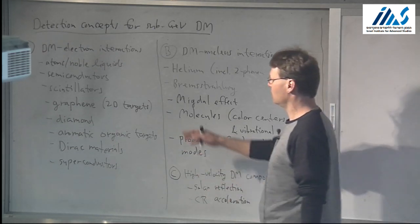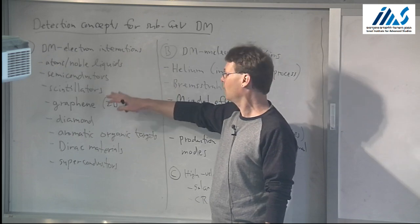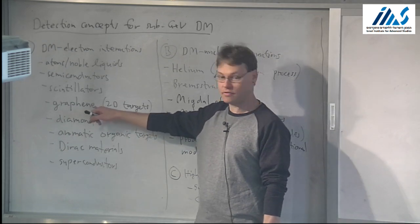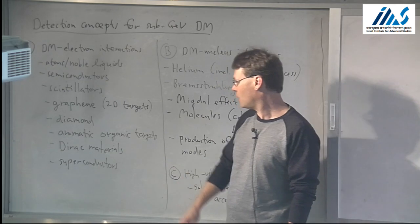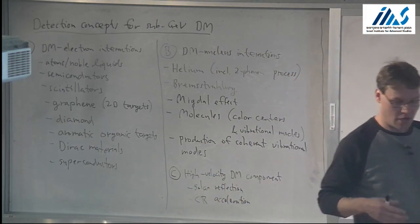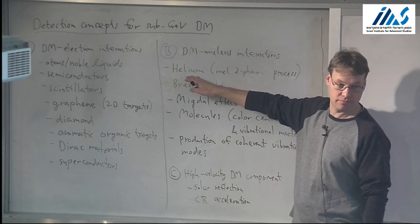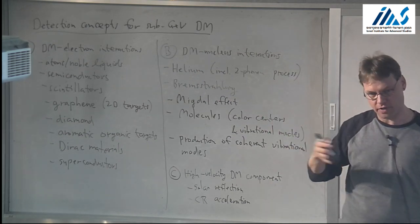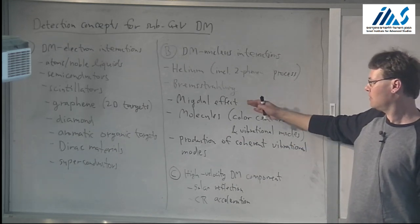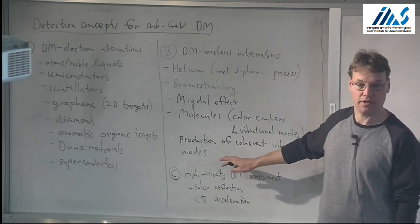We're going to divide them up into dark matter-electron interactions — looking at dark matter interactions with atoms or noble liquids like xenon or argon, semiconductors like silicon and germanium, scintillators, two-dimensional targets like graphene, diamond, aromatic organic targets, Dirac materials, and superconductors. We'll also look at dark matter nuclear interactions: elastic nuclear recoils and helium, and extending below an MeV down to keV masses by including off-shell processes that produce two phonons, Bremsstrahlung, the Migdal effect, molecular targets, and production of coherent vibrational modes — optical and acoustic phonons.